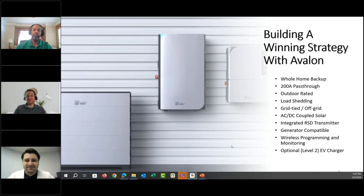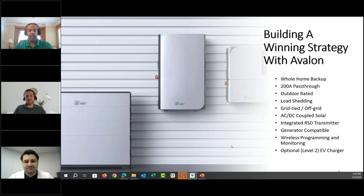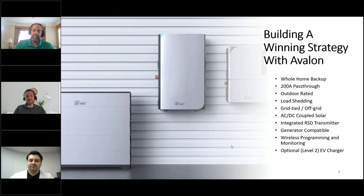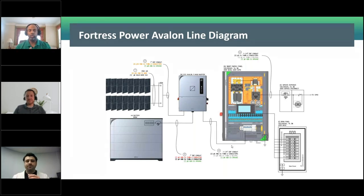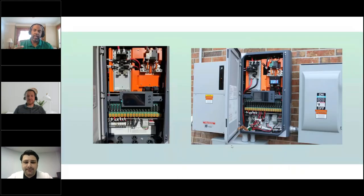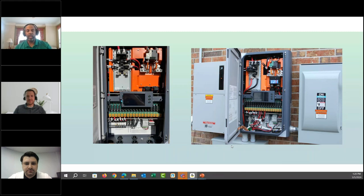Gio eloquently went through the slides. When we talk about a winning solution, we have whole home backup, 200-amp pass-through, outdoor rated, and everything the Avalon is capable of doing. We have a wiring diagram showing at a high level how the Avalon gets wired together. The smart energy panel is the heart of the system. Brad, talk about this picture — the main thing we want to discuss is the ability to streamline your installs.